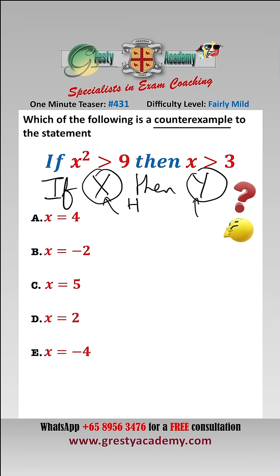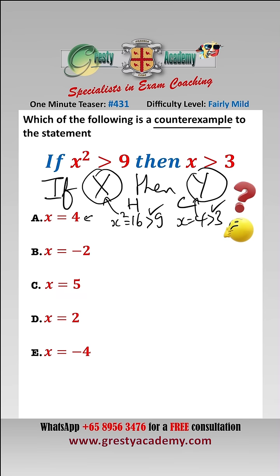Here's the hypothesis and the conclusion. Option a: x equals 4. Well, that means x squared is equal to 16, which is greater than 9, so the hypothesis is true. But the conclusion, x equals 4, which is greater than 3, is also true. So that is not a counterexample.